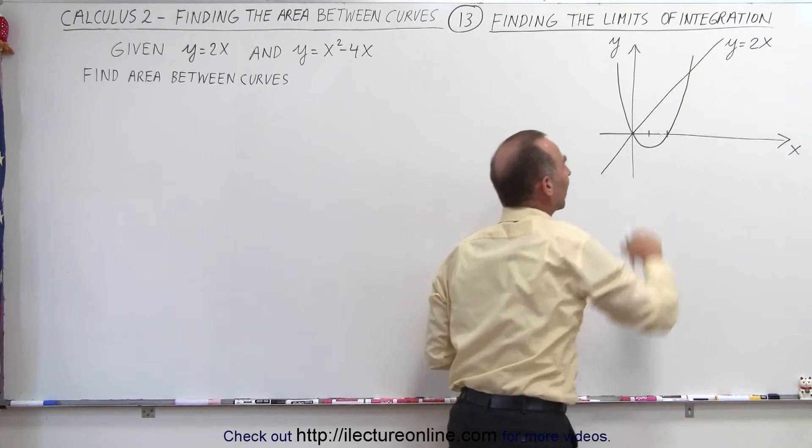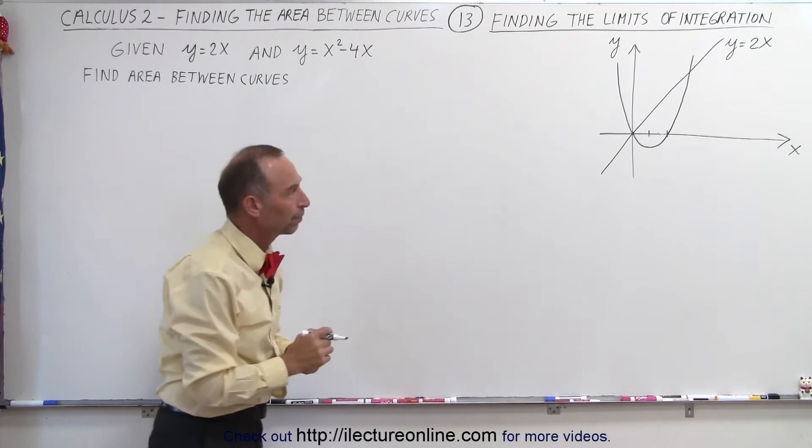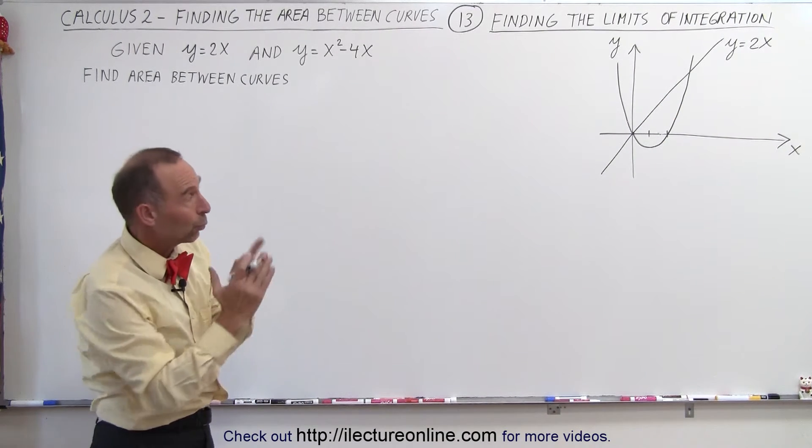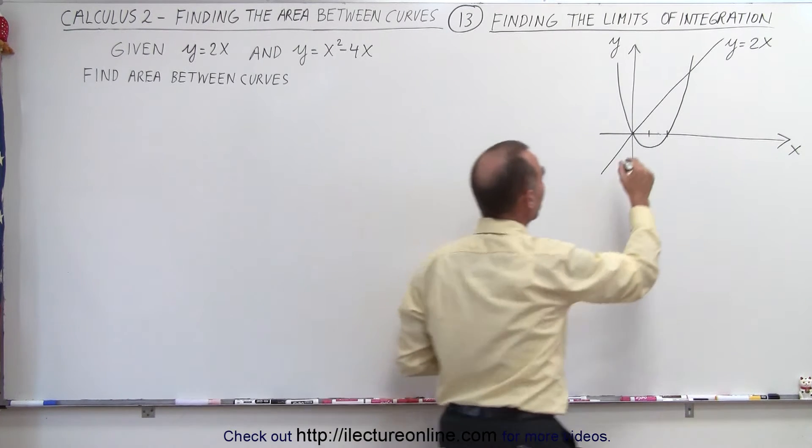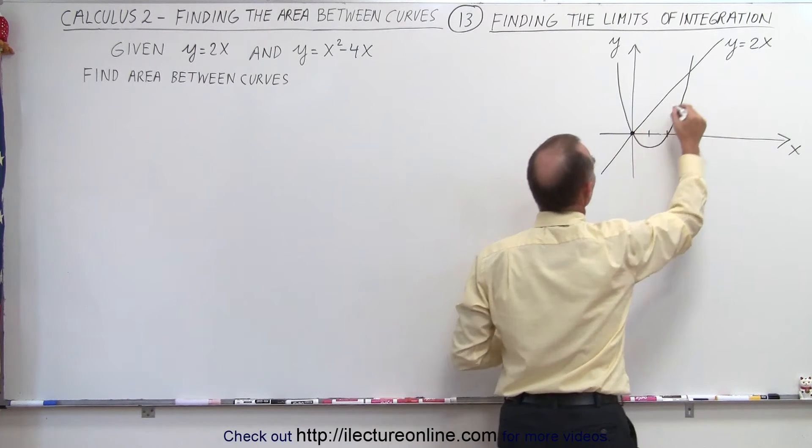And it looks like we're trying to find the area between the two curves there, which means we need to find out where they cross one another. So that will be right here at the origin, that's straightforward, but where did it cross here?